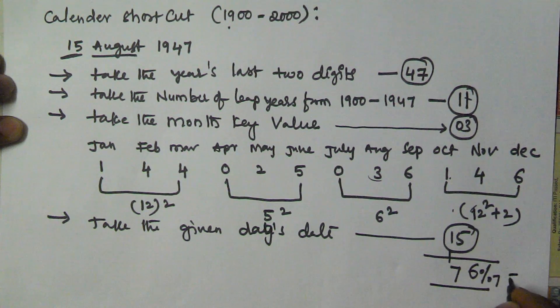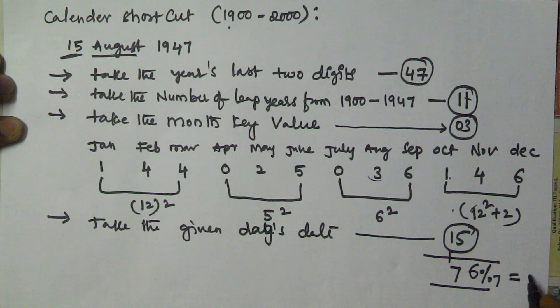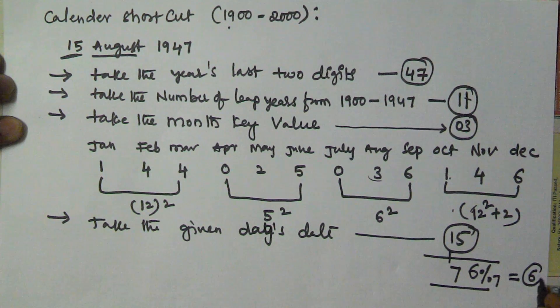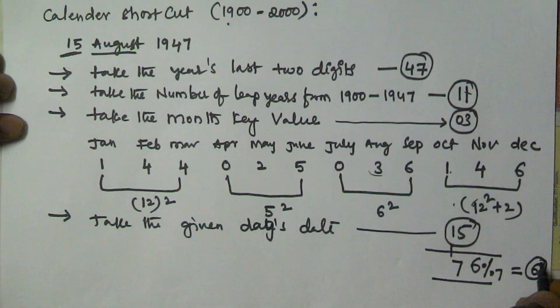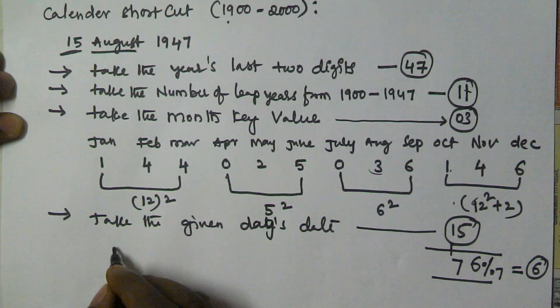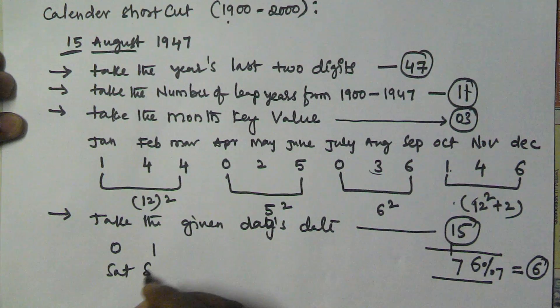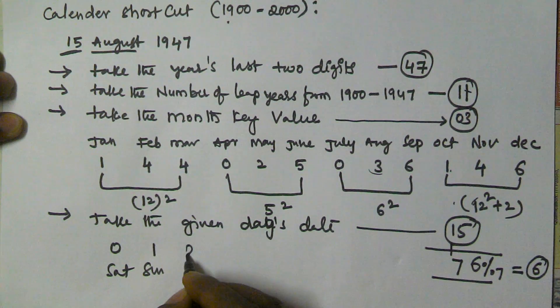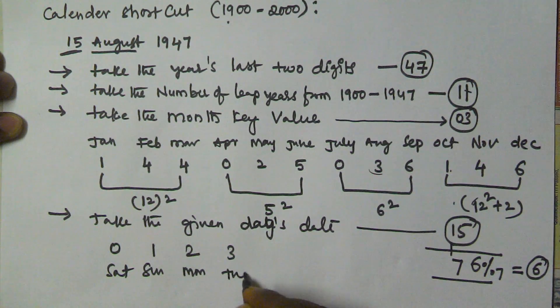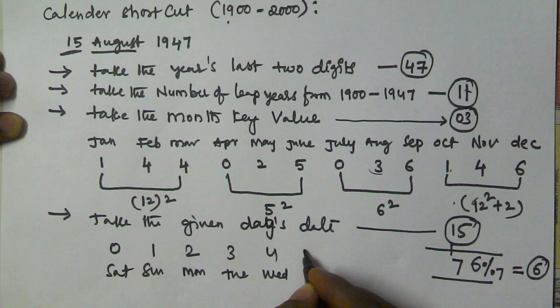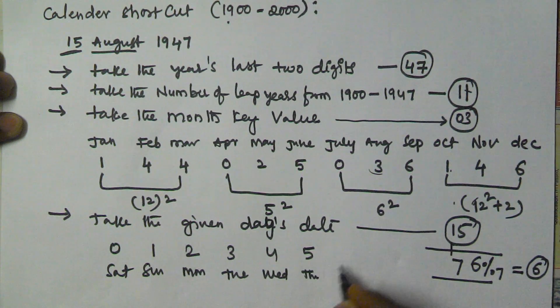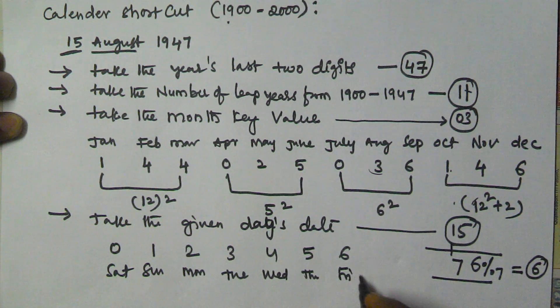In this shortcut, 0 means Saturday, 1 means Sunday, 2 means Monday, 3 means Tuesday, 4 means Wednesday, 5 means Thursday, and 6 means Friday.